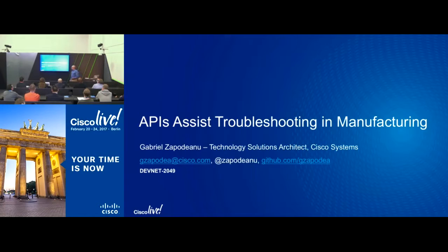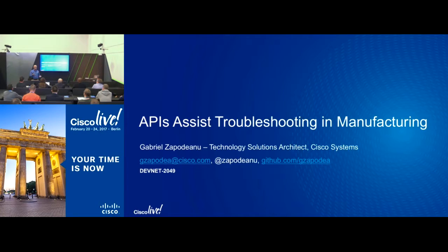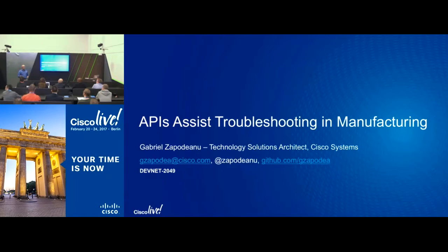Our session today is focused on a manufacturing vertical, but the same technologies and concepts I'm going to show as a use case can be applied anywhere in any industry. All of us have critical assets that are wireless or wired, and the same troubleshooting methods can apply. We can speed up troubleshooting by using APIs to collect data, automate repetitive tasks, and get back to operations much quicker.